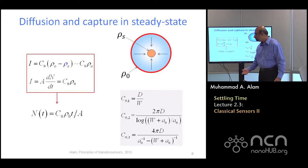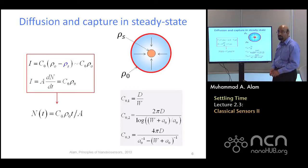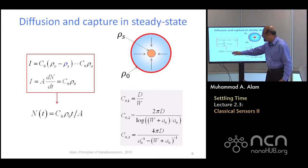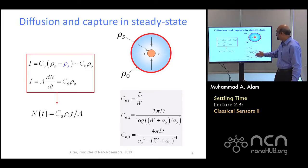And if you integrate this system, the number of molecules captured for this structure is simply given by the capacitance, diffusion equivalent capacitance, the density of analyte, and linearly proportional to time. Because it is a continuous steady state flux. And this capacitance, of course, depends on the geometry of the sensor and the surrounding media itself.